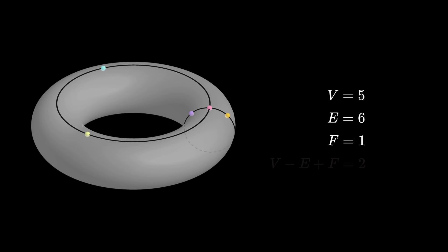For example, in this case, which you can pause and check, V minus E plus F is 0. It turns out that for the torus, there are only 3 cases. It could be 0 like here, or it could be 1 like this case, which again you can pause and check, or it could be 2.